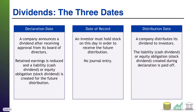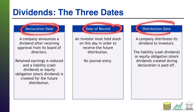Now that you have that background, let's talk about the nuances. Dividends have three key dates associated with them — I call these the three D's: the declaration date, the date of record, and the distribution date.